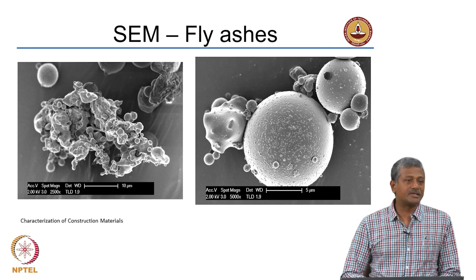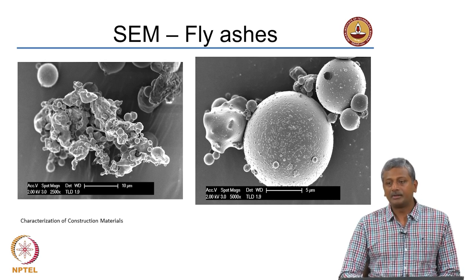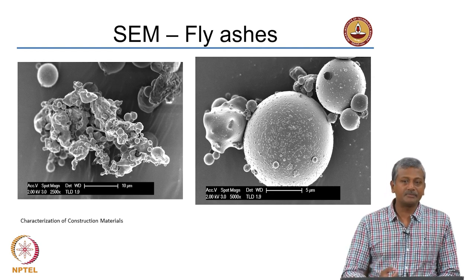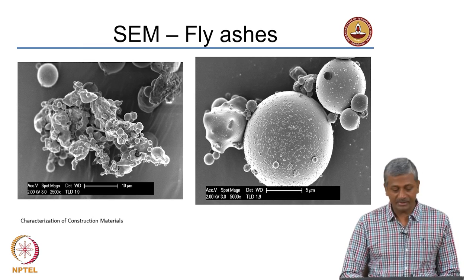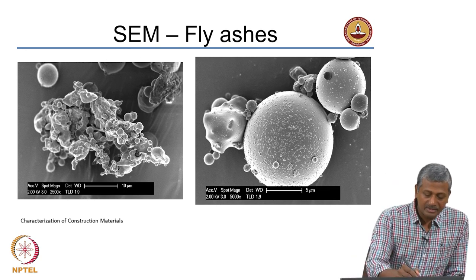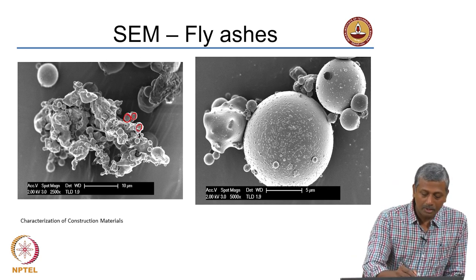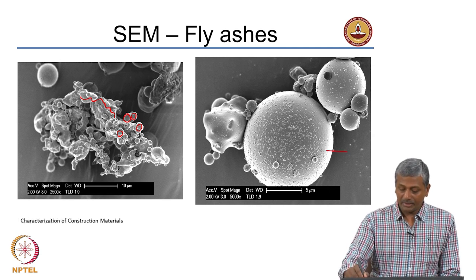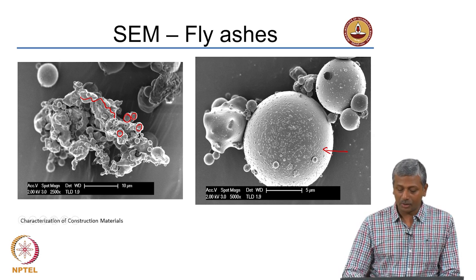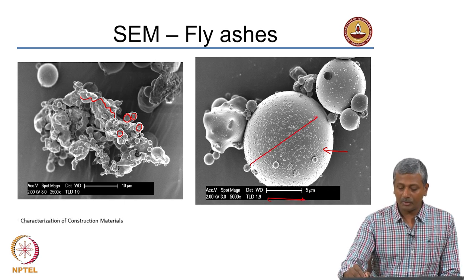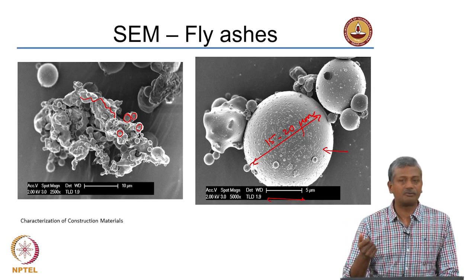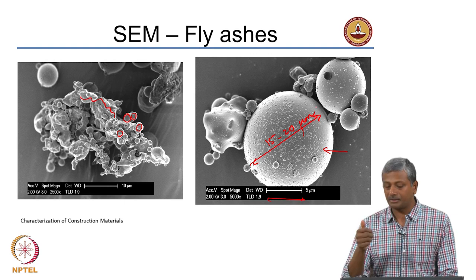SEM has also been employed significantly to study the structure of different supplementary cementing materials, because you can get a very clear understanding of the phases present and the morphological assessment of particles in fly ashes. Here you can see small spherical solid particles of fly ash connected by a loosely held medium. A higher magnification image of a single solid particle — with an entire width of field of only 5 microns — shows something of the order of 15 to 20 microns in diameter, which is the typical size of a fly ash particle, spherical in nature.